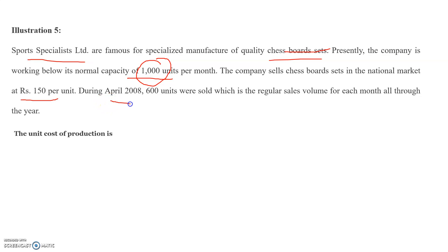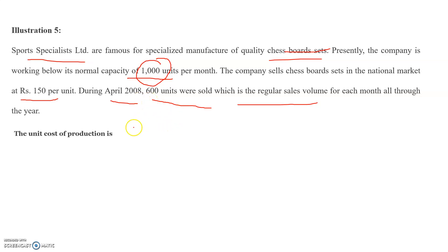In April 2008, 600 units were sold, which is the regular sales only. Our capacity is 1000 units per month, but normally we are selling only 600 units.